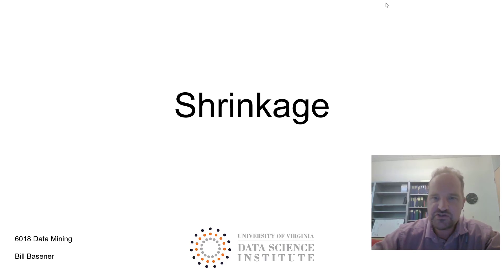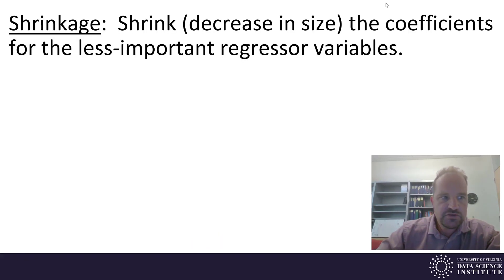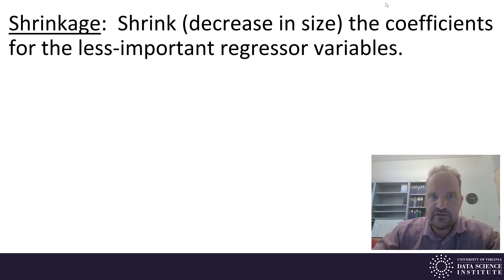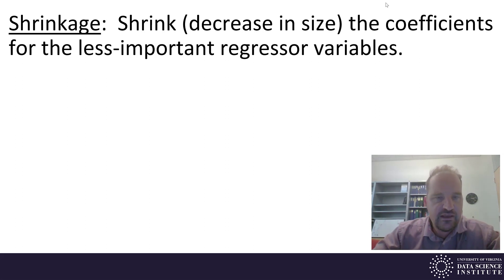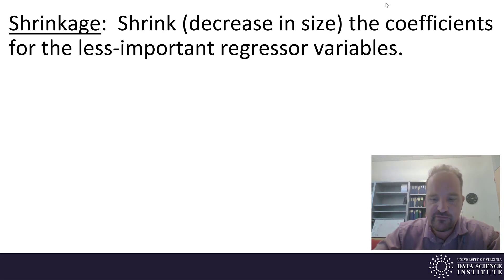Welcome to the lesson video on shrinkage. Shrinkage in multivariate linear regression is a process of shrinking or decreasing in size the coefficients for less important regressor variables.